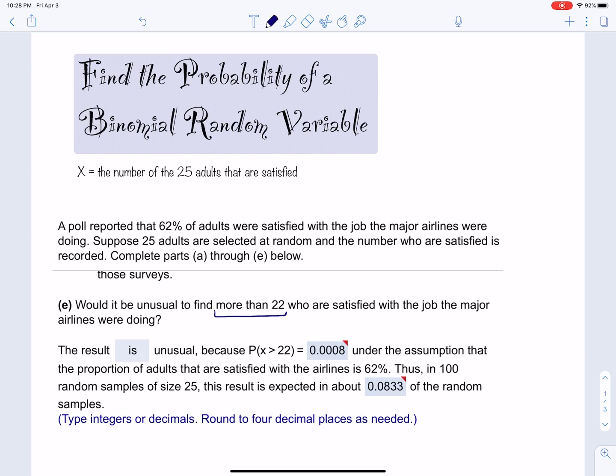First of all, X is a random variable. And what does that stand for? The number of the 25 adults that are satisfied. Because there are 25 adults that they ask the question, are you satisfied? Notice that it's binomial, because first of all we have a fixed number of trials. We have 25 people that they ask.